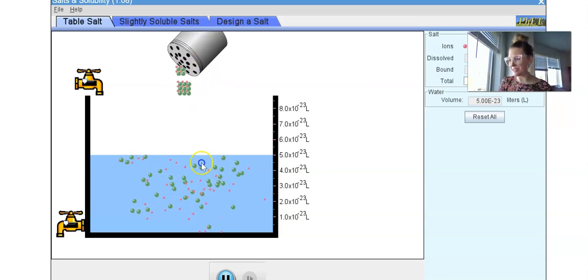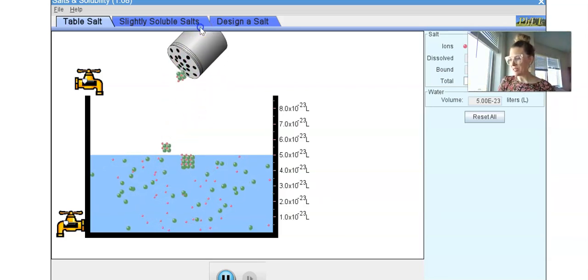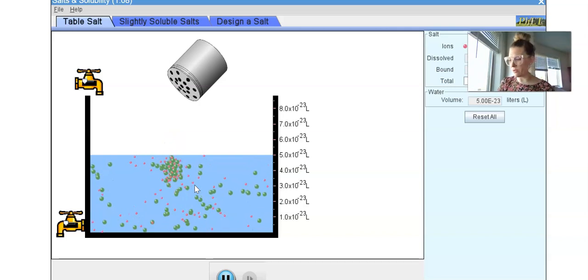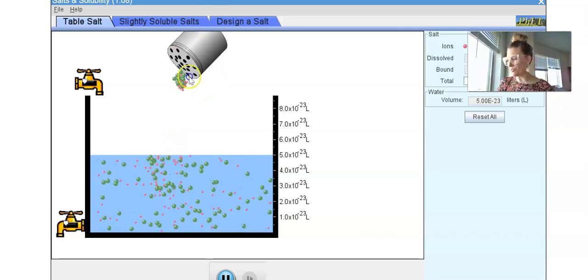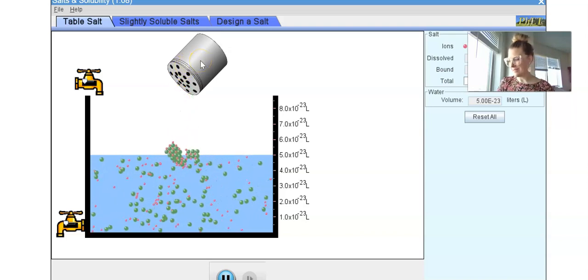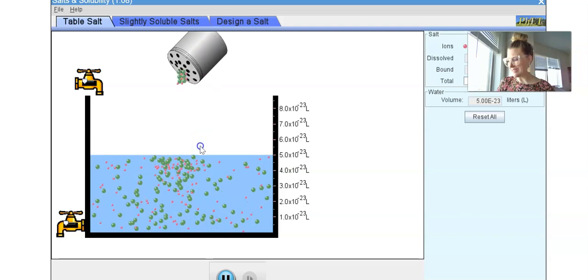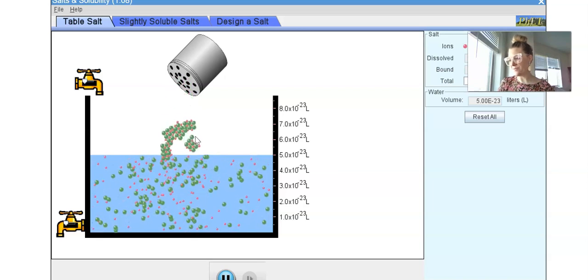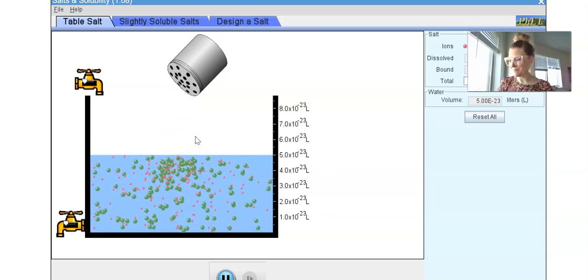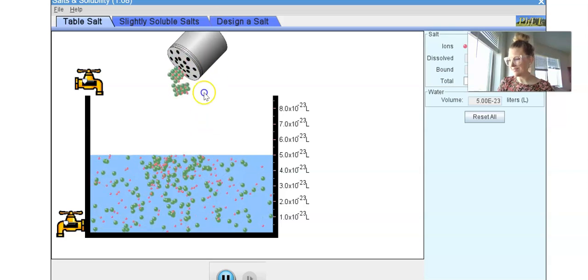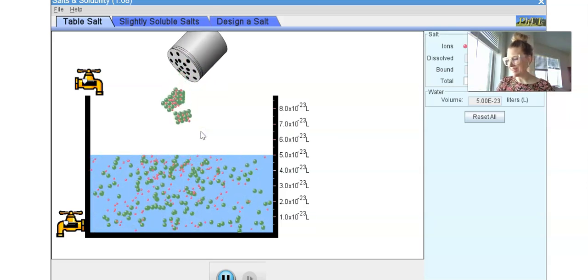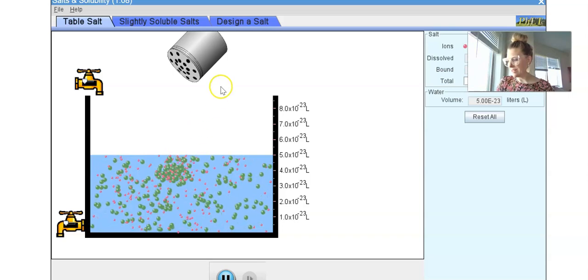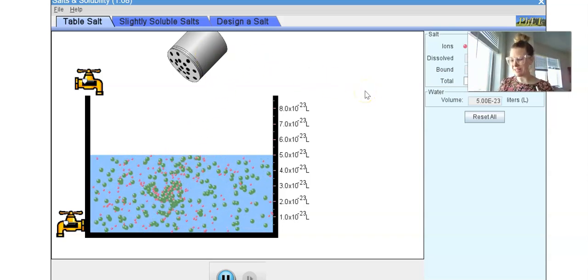So we're going to keep adding it. And I want to know, how do we know when we've reached a saturated solution? How do we know that the solution can no longer dissolve any more salt? And it looks like it's still dissolving, so let's add a little bit more. See if we can reach that point of saturation. Sorry, this is like laggy on my end, so it's hard for me to shake that salt shaker any faster. But it looks like we've reached our point of saturation.